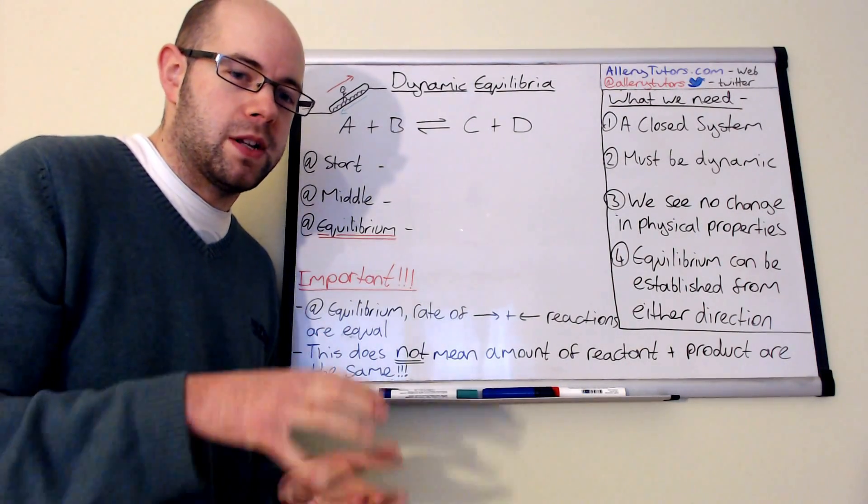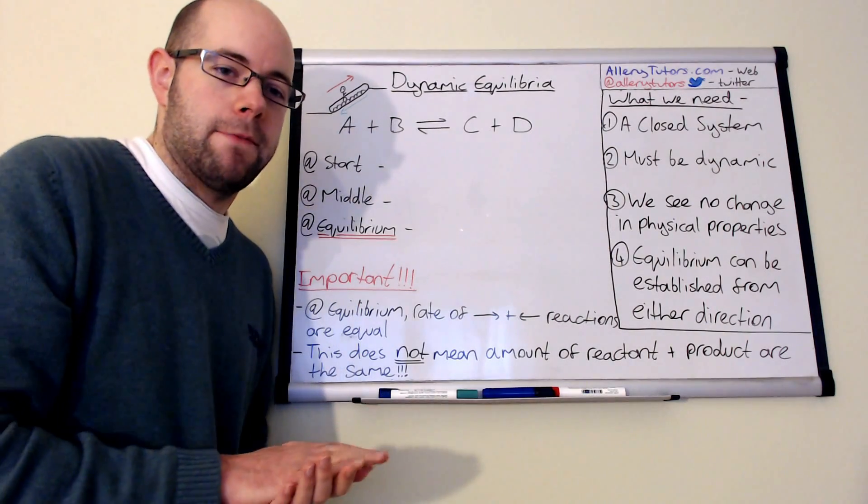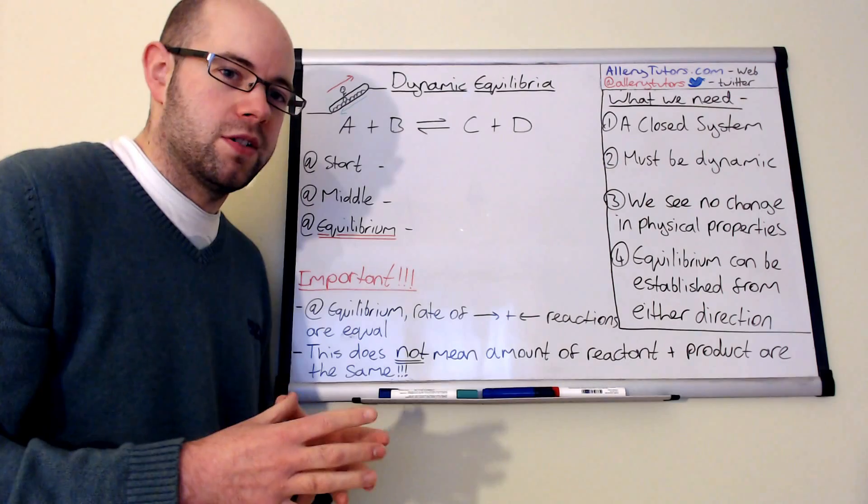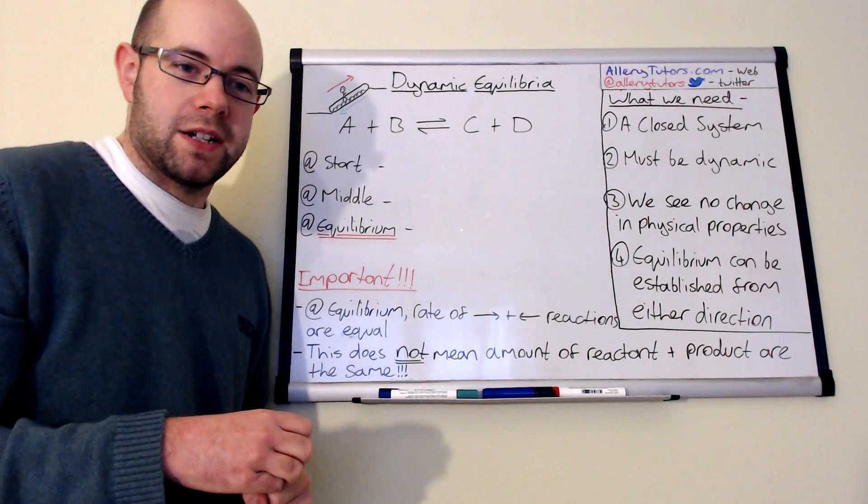That doesn't necessarily mean that you need a lid on top of your reaction. What it means is that your reactants or products cannot escape when this reaction occurs. If there's an opportunity or if there's a potential for the reactants and products to escape,